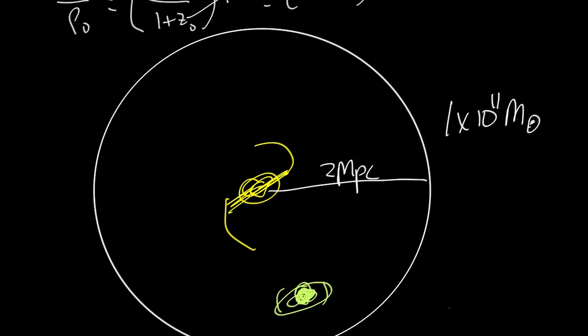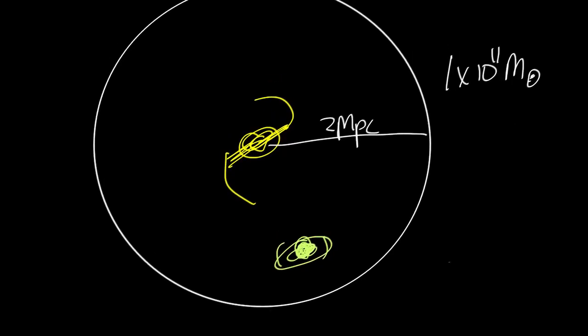So we can calculate the density of the universe, or at least our own little neighborhood of the universe, by taking the mass in the box, 1 times 10 to the 11 solar masses, and dividing it by the volume of the box, which is 4 thirds pi times the radius 2 megaparsecs cubed.